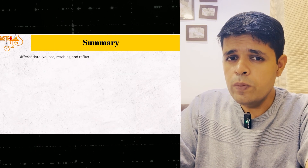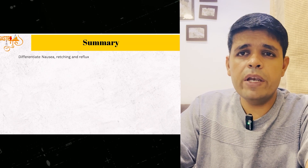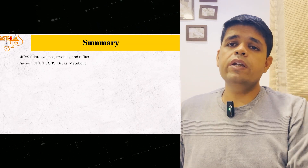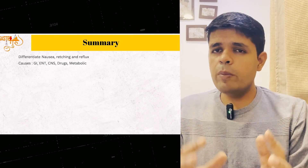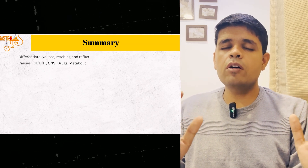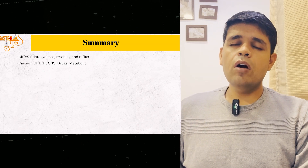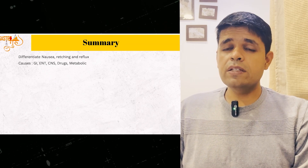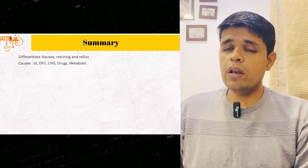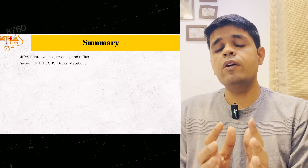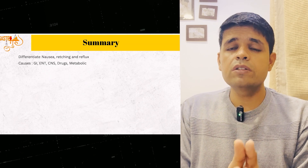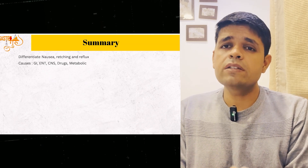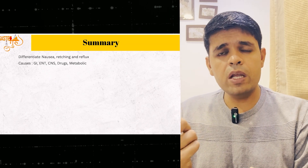To summarize videos 1 and 2: always differentiate vomiting from nausea, retching, and reflux. For causes, think of five major categories — abdominal or extra-abdominal. For abdominal causes, no need to memorize — just visualize the organs: liver, gallbladder, bile duct, pancreas, esophagus, stomach, duodenum, intestines, colon, appendix, kidneys, urinary bladder, and pelvic organs. Think of inflammation in each: acute pancreatitis, acute appendicitis, acute cholecystitis, acute gastritis, duodenal ulcer, gastric ulcer — a complete list at your fingertips without memorization.